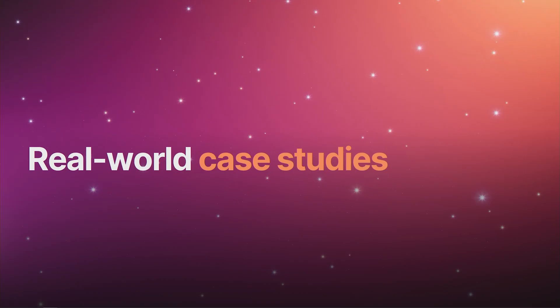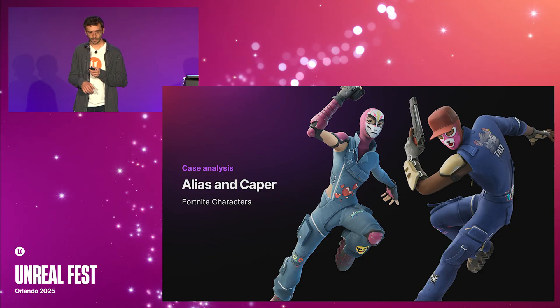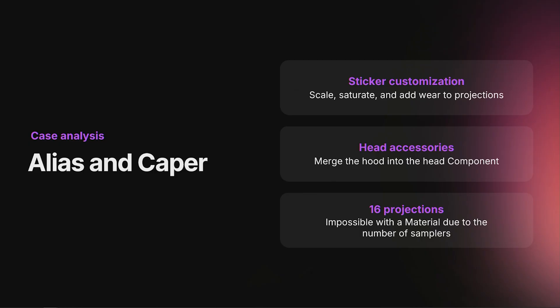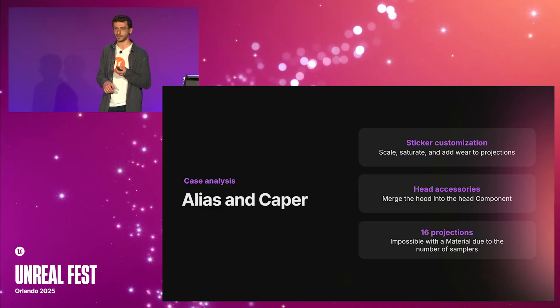Moving on, we're going to see some real-world case studies. Let's start with Aliase and Kaper, both Fortnite characters. In both, you can customize the stickers and head accessories. Head accessories are meshed at runtime. Interestingly, Mutable was chosen for being able to make projections directly into textures. Both characters support up to 16 projections, which would have been impossible to do directly with shaders due to the sheer number of texture samplers.